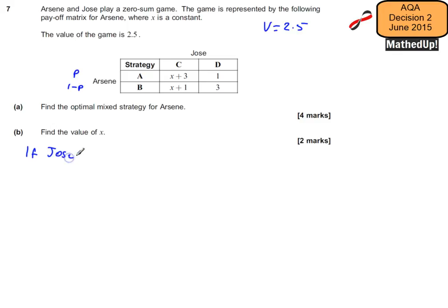If Jose plays C, so if Jose goes for strategy C, then our expected value for Arson is going to be (x + 3) times P plus (x + 1) times (1 - P). Now we know the value of the game is 2.5, so I can plug that in.